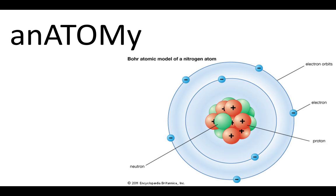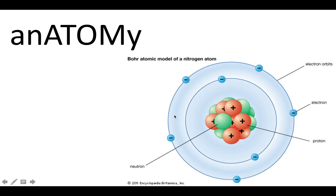The number of protons matters because it defines the element's identity. The atom is structured into a nucleus and a cloud. The nucleus is where the protons and neutrons are — it's very dense, as that video demonstrates. The cloud is made up of electrons that orbit around the nucleus the same way the Earth orbits the sun. We call it an electron cloud because the electrons are always moving, so it kind of looks like a cloud.